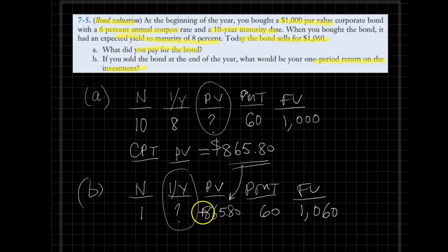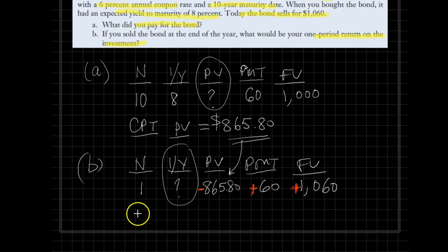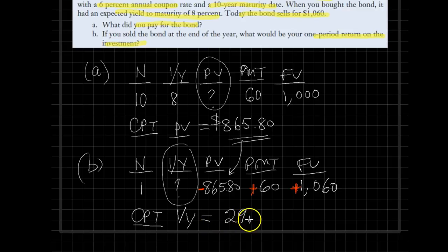Very important: because we are making a payment when we purchase the bond, we should not forget to put the minus sign for the present value and the payment. Future value will be both positive. Using our financial calculator, we compute the I over Y, and in that case I over Y will come out as 29.48%.